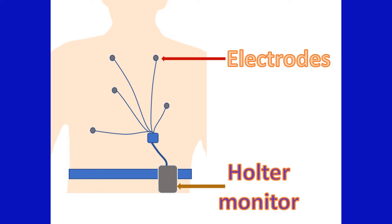Holter monitors were huge devices earlier, almost to be carried in a rucksack. But with advancement of microelectronics, they are just the size of a mobile phone. The recorders can be kept in a belt pouch and leads can be attached over the chest.